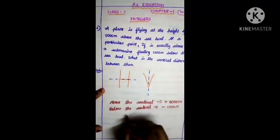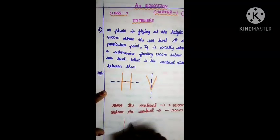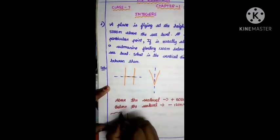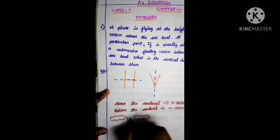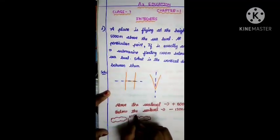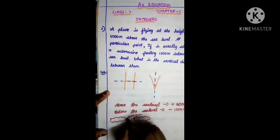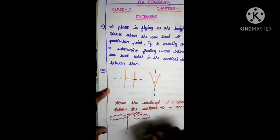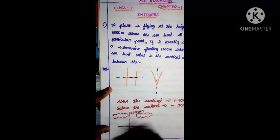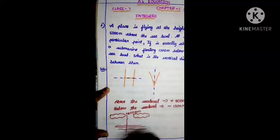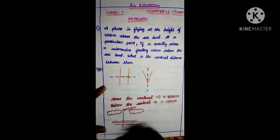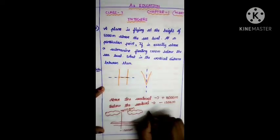So we should draw a diagram. This is above the sea level, 5000 meters, which is plus. This is below the sea level, minus 1200 meters. So this is above and this is below.